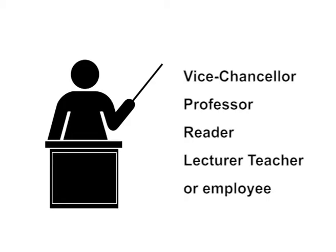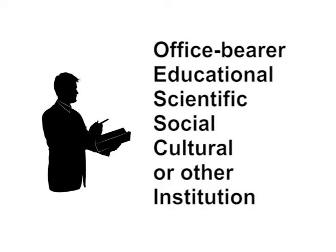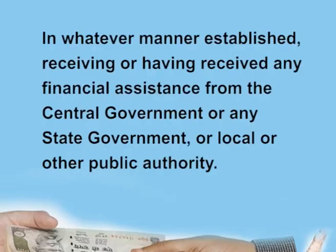Number 11, any person who is a vice chancellor or member of any governing body, professor, reader, lecturer or any other teacher or employee by whatever designation called of any university, and any person whose services have been availed by a university or any other public authority in connection with holding or conducting examinations. Number 12, any person who is an office bearer or an employee of an educational, scientific, social, cultural or other institution in whatever manner established, receiving or having received any financial assistance from the central government or any state government or local or other public authority.